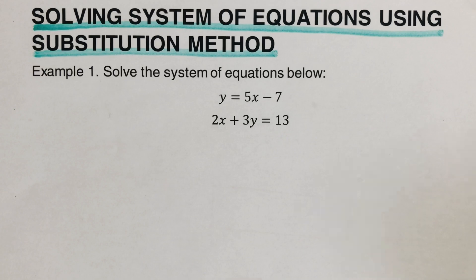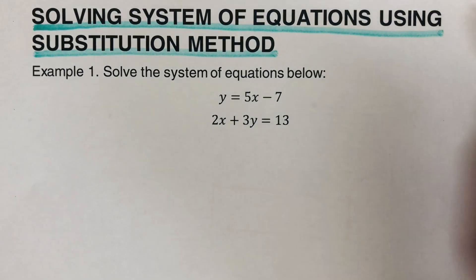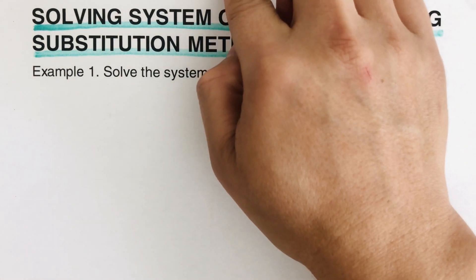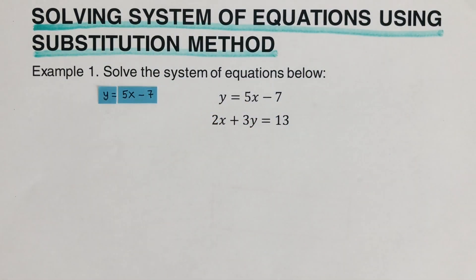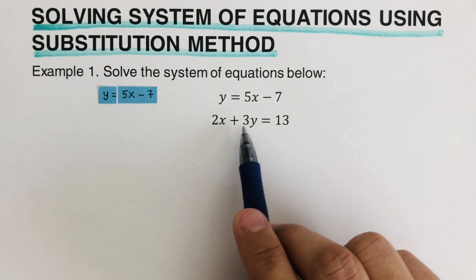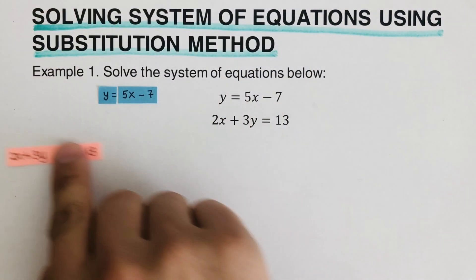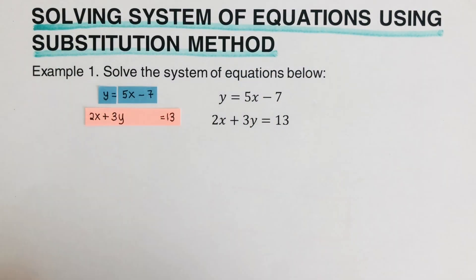Now to better understand this, I'm going to show you an example right here. So we have y equals 5x minus 7. I created a card for this to make it more visual, and the other equation that we have would be 2x plus 3y equals 13, and I also created another card for this.